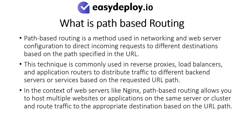What is Path-Based Routing? Path-Based Routing is a method used in networking and web server configuration to direct incoming requests to different destinations based on the path specified in the URL. This technique is commonly used in reverse proxies, load balancers, and application routers to distribute traffic to different backend servers based on the requested URL path.